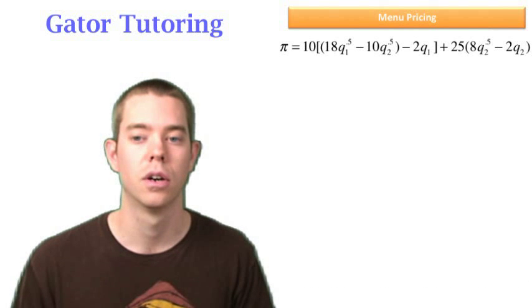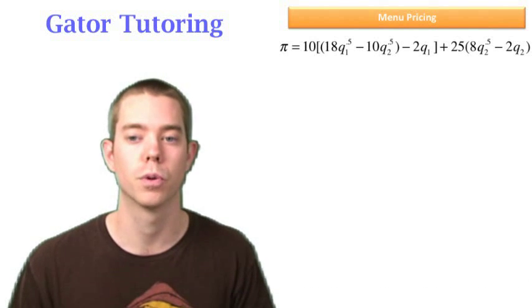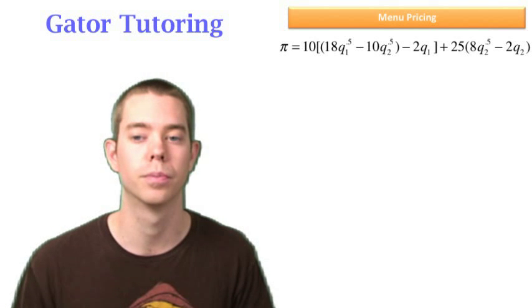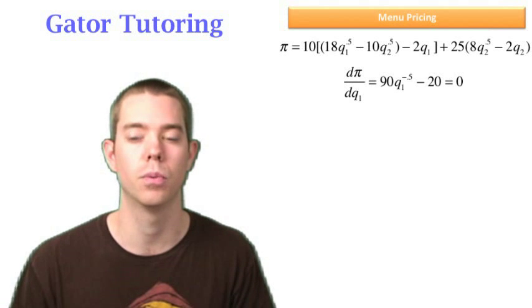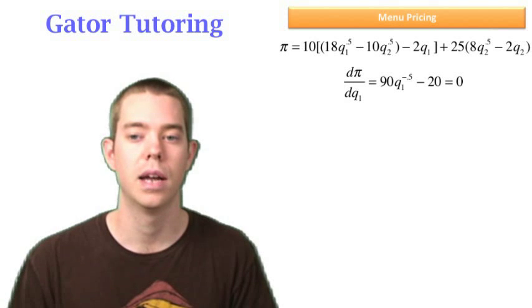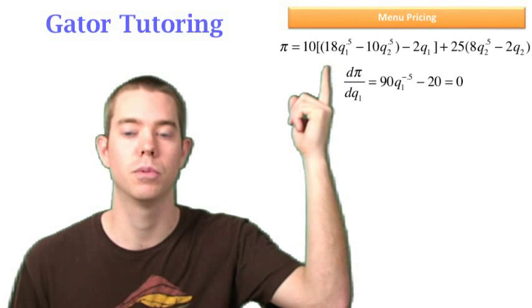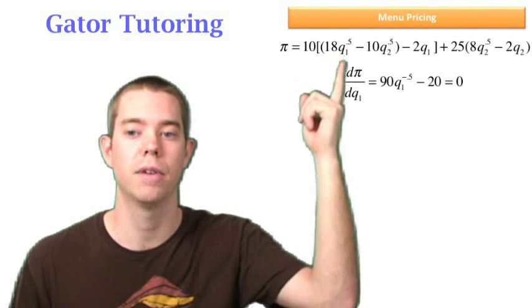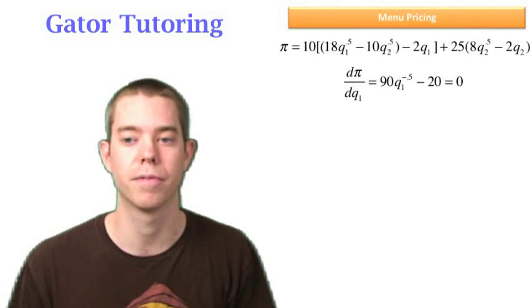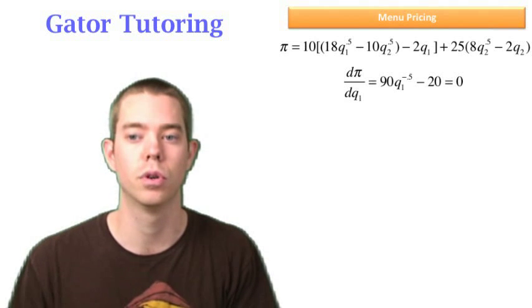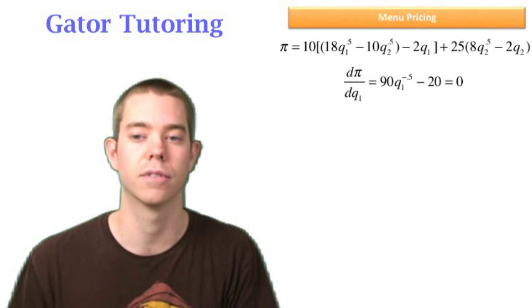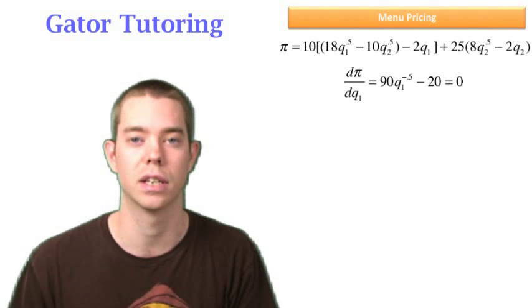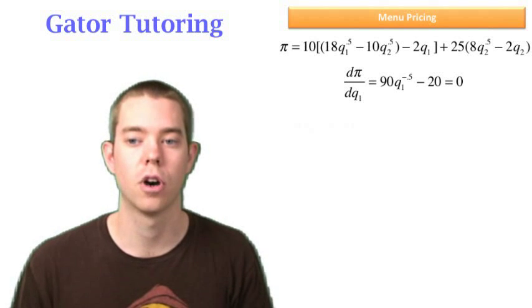Now that we've done this we can take the derivative because we're going to maximize profit with respect to both variables Q1 and Q2. First let's do it with respect to Q1. We'll get 90Q1 to the negative 0.5 minus 20. Notice that what I did there is I distributed through that 10 times 18 which gave me 180. I multiplied it by the 0.5 which gave me that 90. And then I subtracted 1 from the exponent which gave me that negative 0.5. I did the same thing. I multiplied the 10 through by the negative 2Q1 and I got negative 20Q1. I took the derivative to get negative 20.